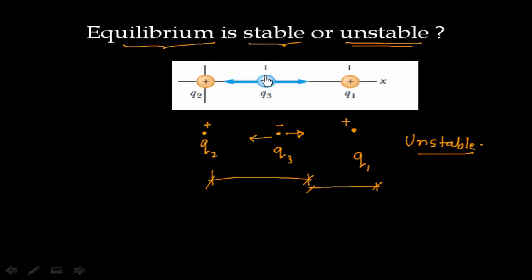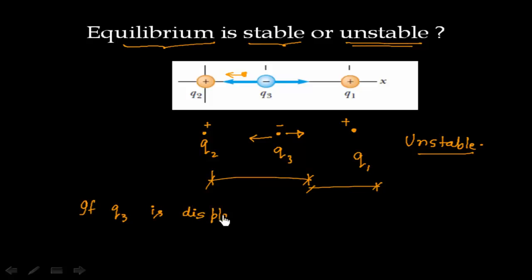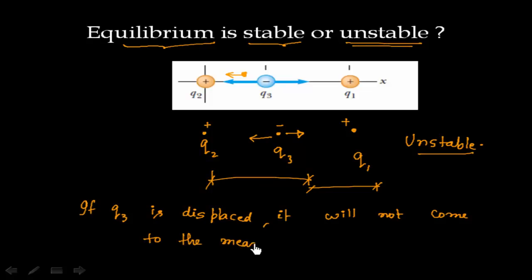We can verify by pushing Q3 to the left as well: the attractive force from Q1 decreases and the attractive force from Q2 increases, so Q3 moves further left. In either direction, Q3 does not return to its original position. Therefore, if Q3 is displaced, it will not come back to the mean position — the equilibrium is unstable.